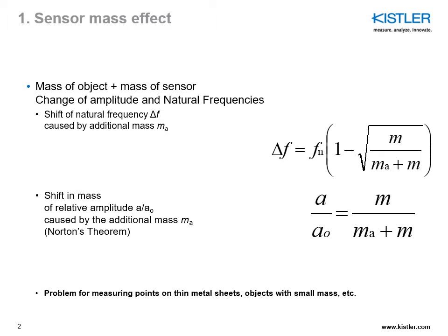The resonance frequency, called here Fn in the formula of a structure, reduces approximately by delta F, where M is the mass of the structure of the unit under study, and Ma is the additional mass from the accelerometer. One can see in this formula that if the mass of the accelerometer is negligible compared to the mass of the system, then delta F should be negligible.